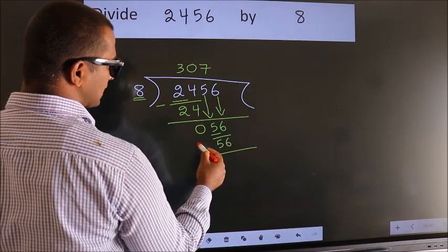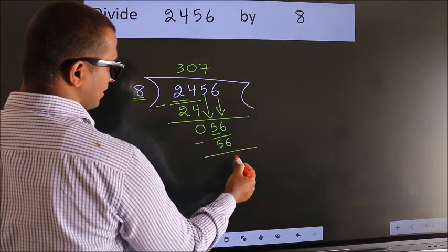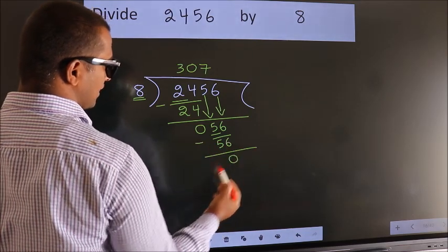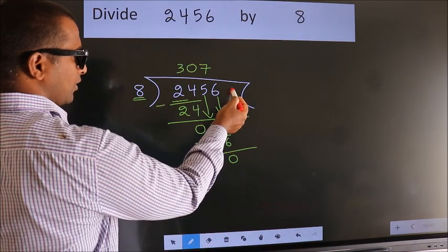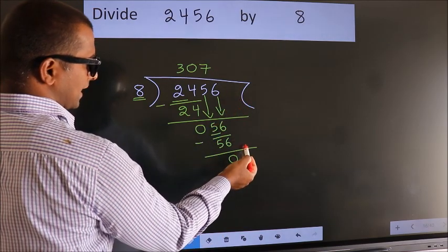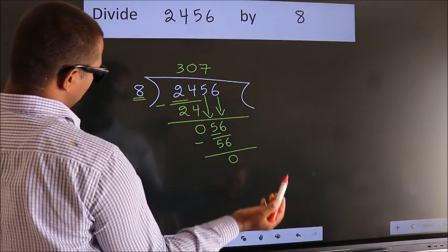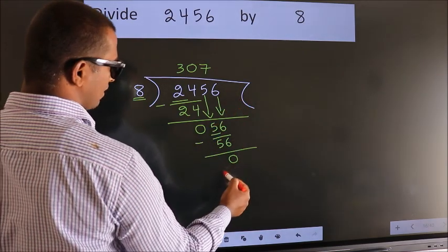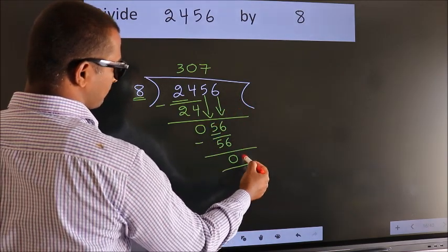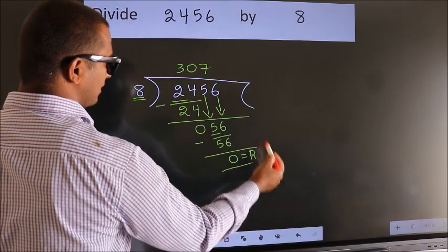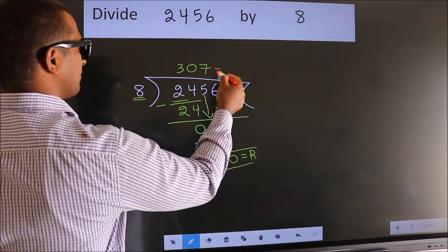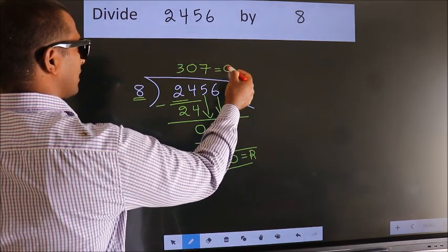Now we subtract — we get 0. There are no more numbers to bring down, so we stop here. This is our remainder and this is our quotient.